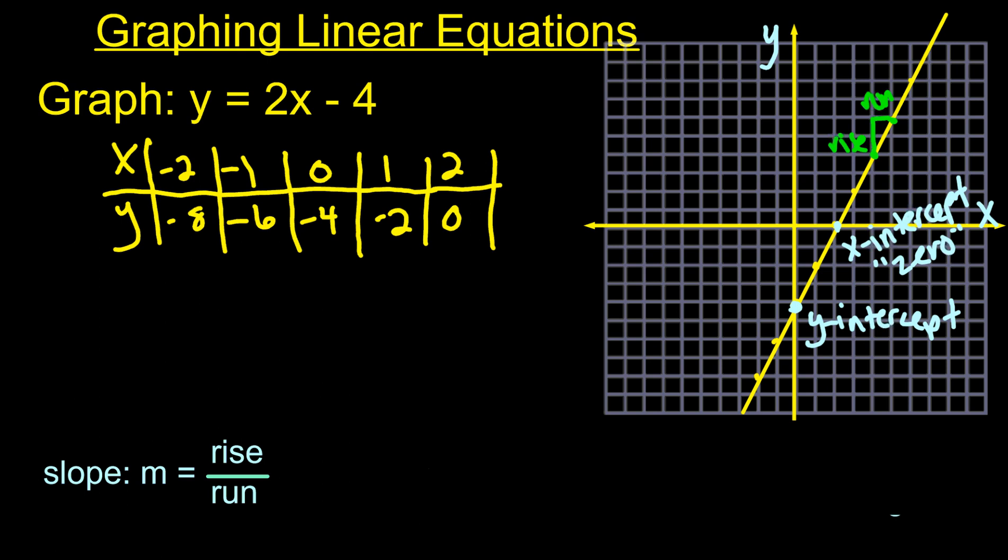And so in this case, the rise is up two, and the run is to the right one. So if you go to the right, it's positive. If you go to the left, it's negative. So in this case, the slope is two over one, or just two.